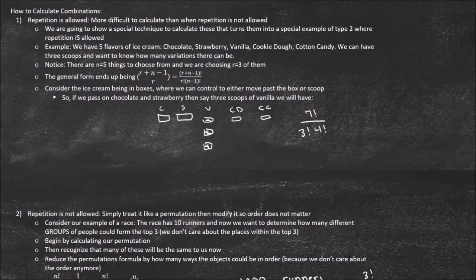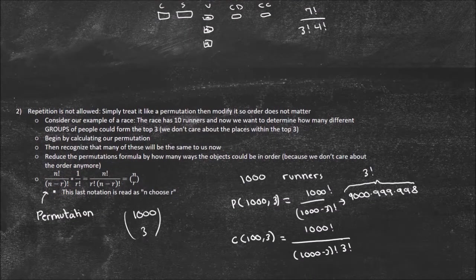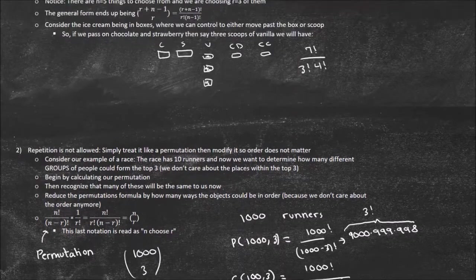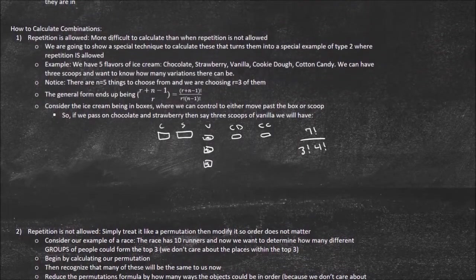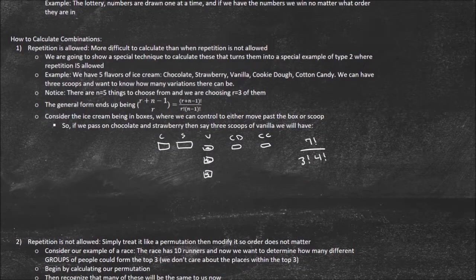So the formula is (r plus n minus 1) — we take away one because if I have five options and I'm choosing three, there aren't really eight different things I can get, there are seven. Then it's r factorial just like before, and then (n minus 1) factorial as well. That's combinations with repetition allowed. I recommend drawing the picture to help make sense of these.